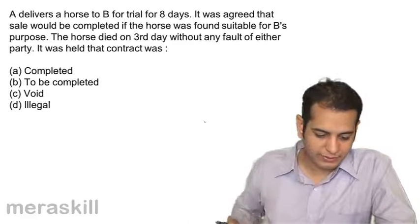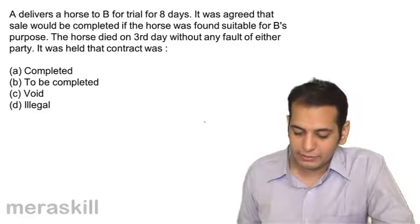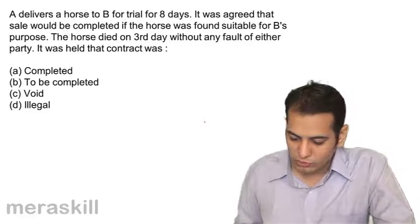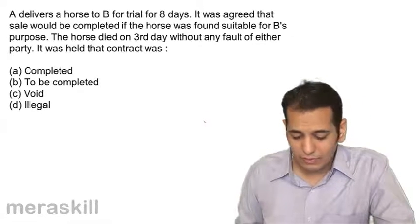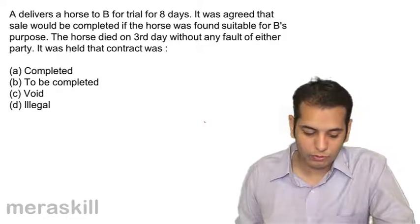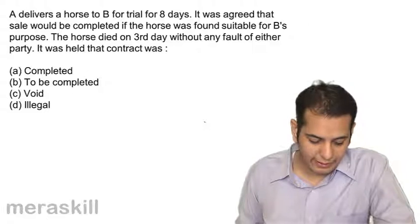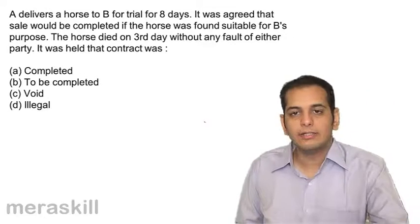Let's take a quiz on the topics we've covered till now. First question: A delivers a horse to B for trial for 8 days. It was agreed that the sale would be completed if the horse was found suitable for B's purpose. The horse died on the third day without any fault of either party. The contract was: A completed, B to be completed, C void, D illegal.